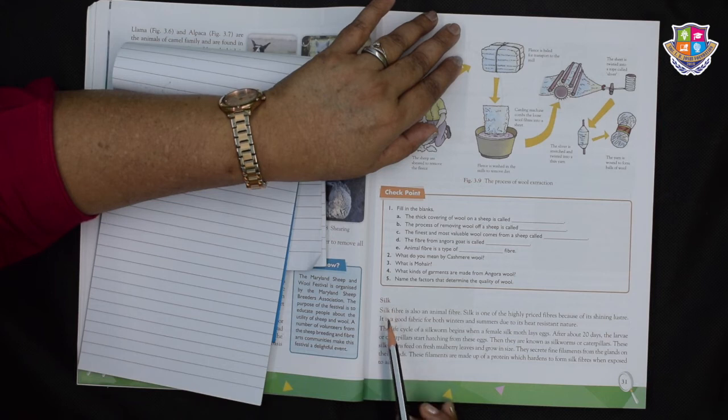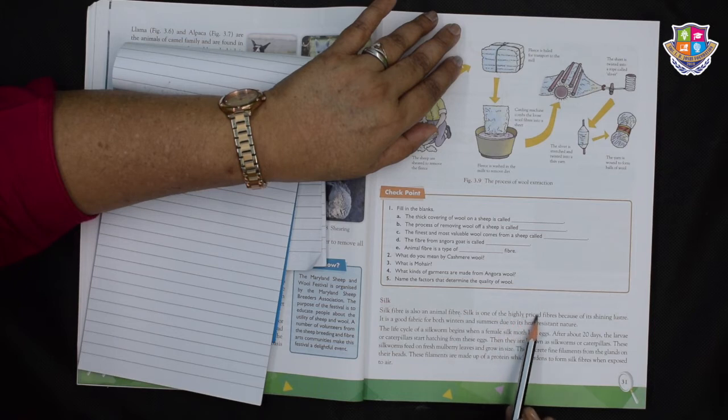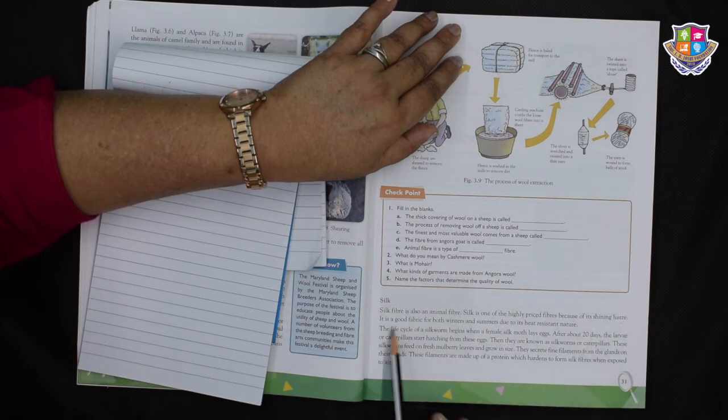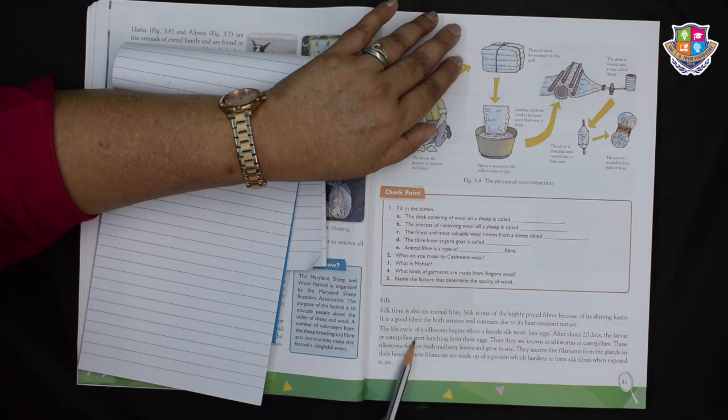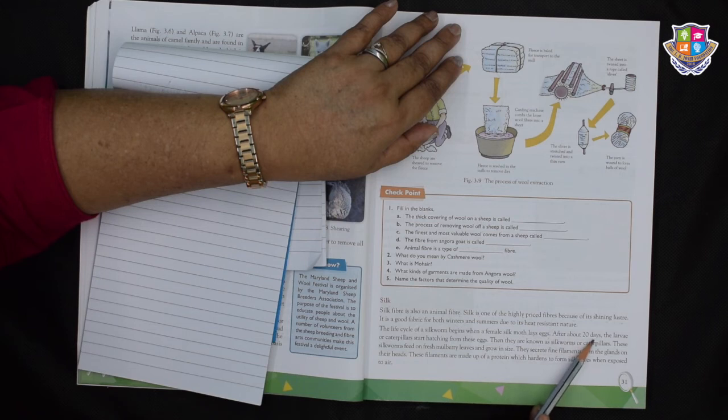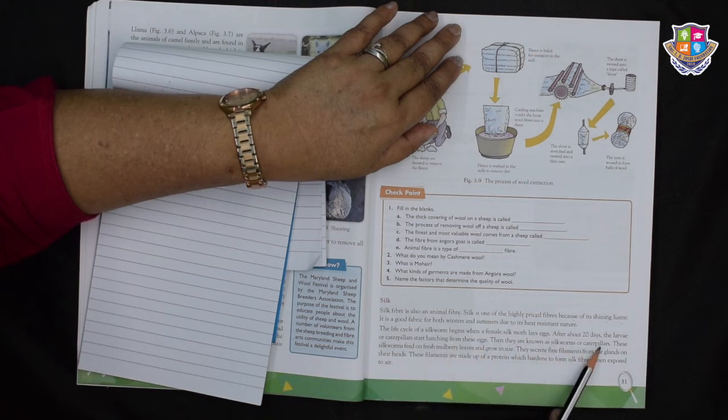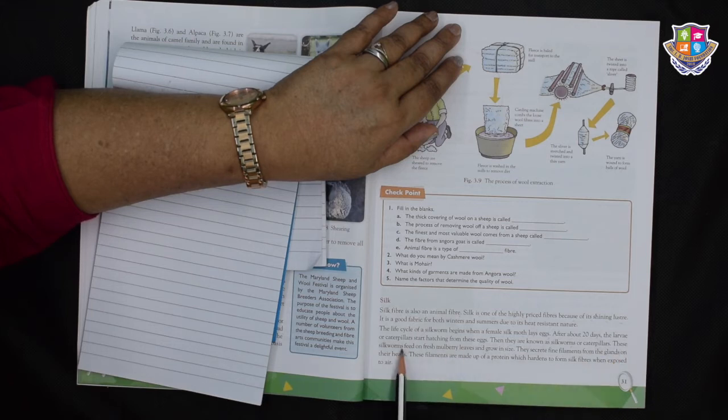Now we come to silk. Silk fiber is also an animal fiber. Silk is one of the highly priced fibers because of its shining luster. It is a good fabric for both winters and summers due to its heat resistant nature. The life cycle of a silkworm begins when a female silk moth lays eggs. After about 20 days the larva or caterpillars start hatching from these eggs. Then they are known as silkworms or caterpillars.